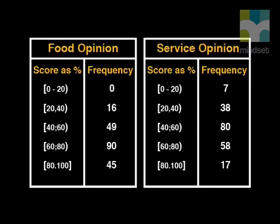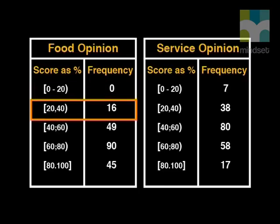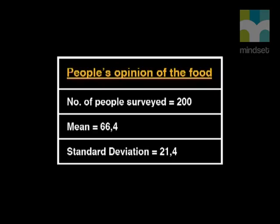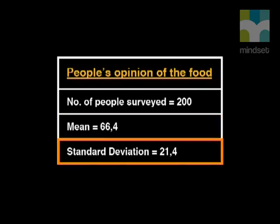I suggest we change the raw scores to a percentage rating. Each interval in our new data will be continuous. Look at how I've grouped our data. Scores below 2 fall into the first interval from 0 to less than 20%. The second interval includes all scores of 2 and 3, and so on. If we look at people's opinions of the food, a mean score of 66.4 was achieved with a standard deviation of 21.4.